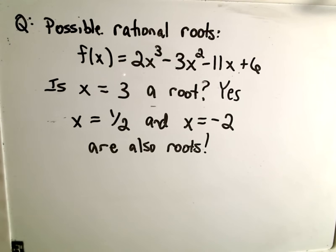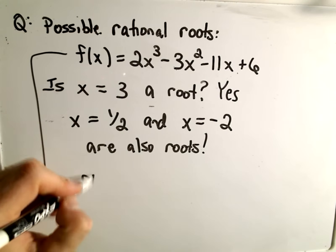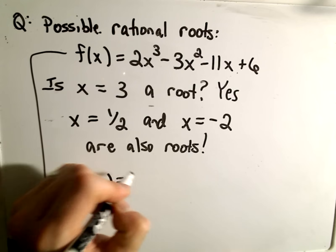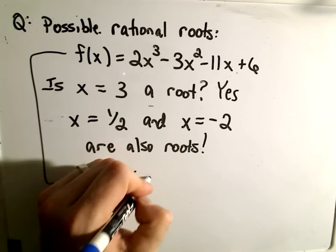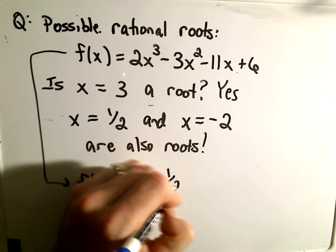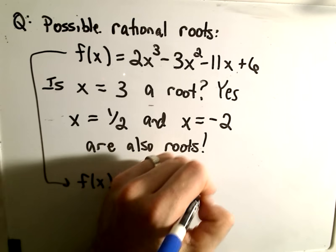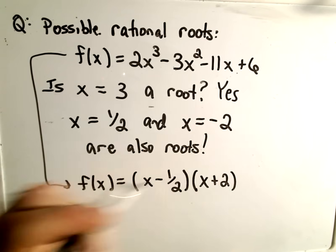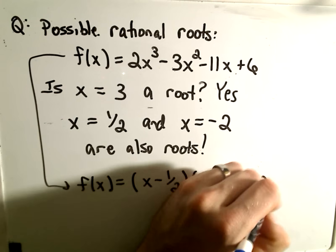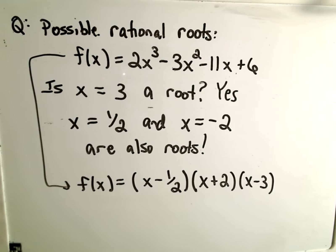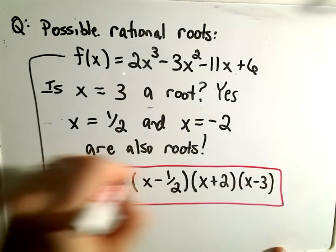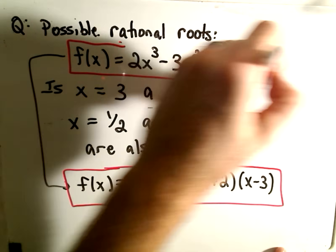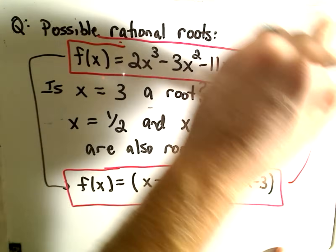One last question: if we know the roots, how does this polynomial factor? Well, if we know the roots, we can factor it. You just take the opposite sign basically. So (x - 1/2) is a factor, (x + 2) is a factor, and then (x - 3) would also be a factor. You can multiply this thing all the way back out and check and see that you actually get the very original thing back.